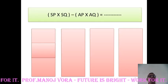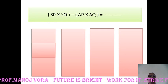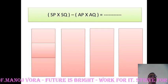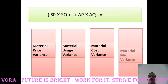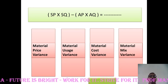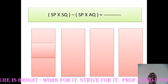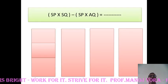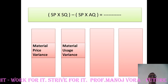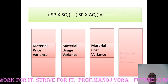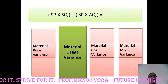Standard price multiplied by standard quantity minus actual price multiplied by actual quantity gives us — material price variance, material cost variance, or material mix variance. Your right answer has to be material cost variance. Standard price multiplied by standard quantity minus standard price multiplied by actual quantity gives us — material price variance, material usage variance, material cost variance, or material mix variance. Your correct answer has to be material usage variance.